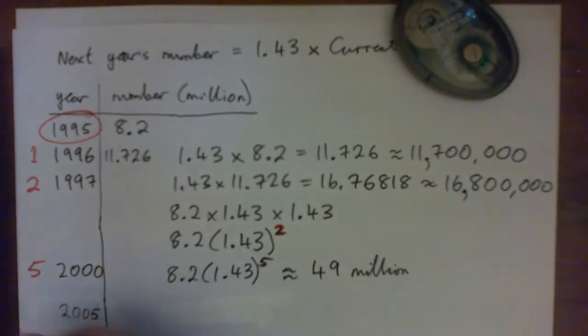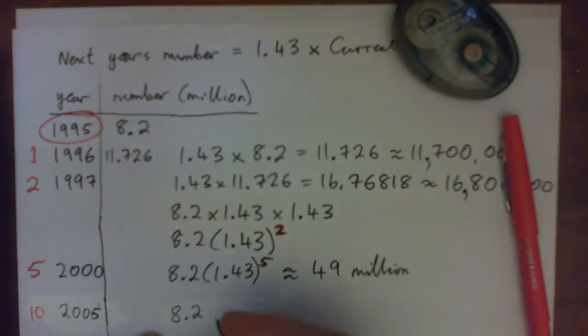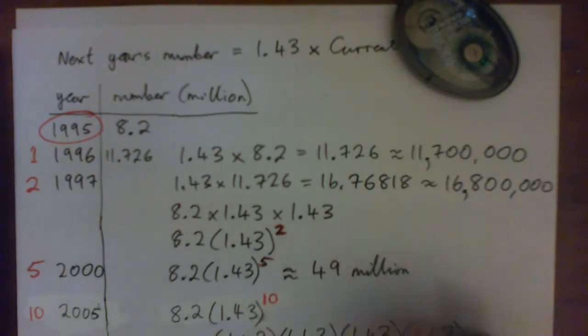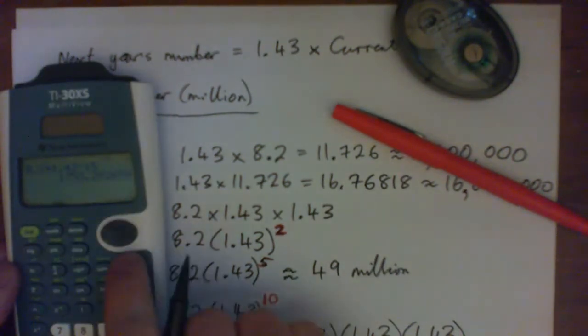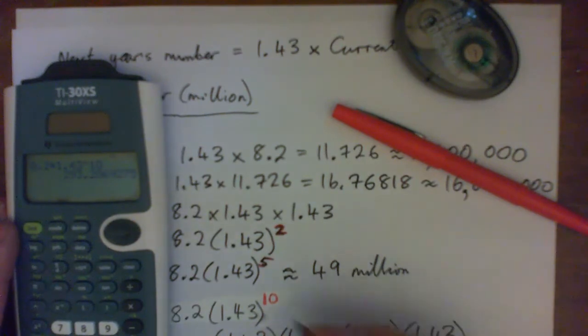Okay, so 2005 is 10 years, 10 years later than 1995, isn't it? So we start with our 8.2 million internet domain hosts in 1995, and each year it increases by, we times it by 1.43 to get the increase, and then the next year times it by 1.43 again. 1.43, 1.43, 1.43 would be 3 years later, because it's 3 of them, and then times by 1.43, that would be 4 years later, and so on. And so, after 10 years, it's 1.43 times itself 10 times, or 1.43 to the power of 10, right? And let's plug that in the calculator. And we get 293.2.